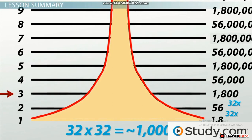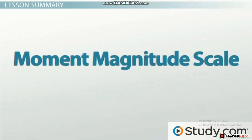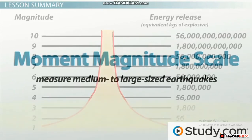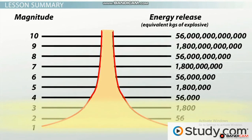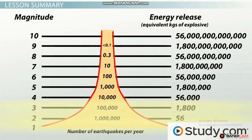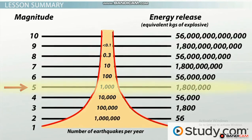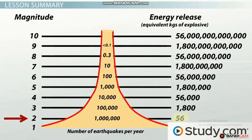Because the Richter Scale was designed for medium-sized quakes, the Moment Magnitude Scale was created to measure medium to large sized earthquakes. Anything below a 3.5 is still measured on the Richter Scale. Luckily, most quakes that occur on Earth are low in magnitude — about a million magnitude two quakes occur each year, while only about a thousand magnitude five quakes happen annually. A magnitude two quake releases energy equivalent to 50 kilograms of explosive, but a magnitude five is equivalent to one million eight hundred thousand kilograms of explosive.